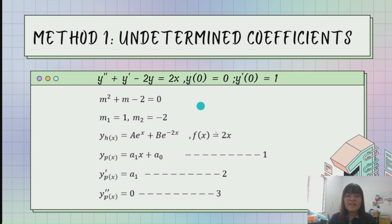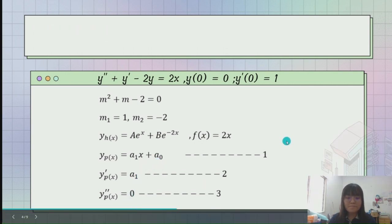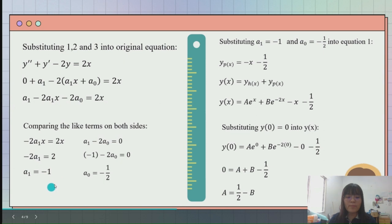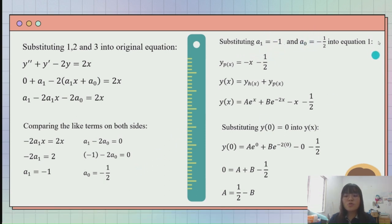Based on the equation, we also get f(x) equal to 2x. Based on Table 2.2, we get yp(x) equal to a1x plus a0. After that, we differentiate this equation twice and get a1 and 0. Now we substitute equations 1, 2, and 3 into the original equation and get a1 minus 2a1x minus 2a0 equal to 2x. Comparing like terms on both sides, we get a1 equal to minus 1 and a0 equal to negative 1 over 2. We then substitute the values of a1 and a0 into equation 1 to get yp(x). To find y(x), we add yh(x) plus yp(x) to get ae^x plus be^(minus 2x) minus x minus 1 over 2.